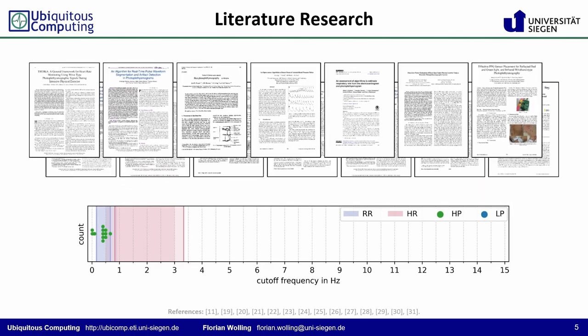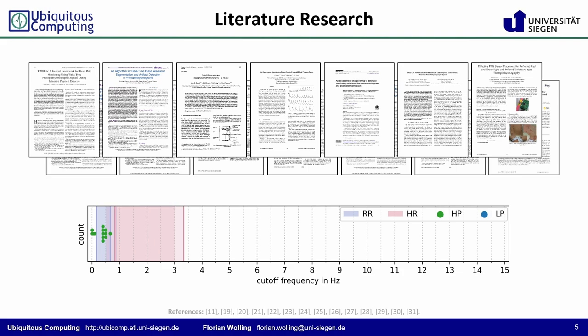The lower cutoff frequency is usually placed at the lower bound of the natural cardiac frequency band. Depending on the intended application, the respiratory frequency band is of interest and either explicitly included or excluded. In contrast, the placement of the upper cutoff frequency shows greater variety. Besides the upper bound of the heart rate, it also depends on the applied algorithm and the desired number of harmonics to shape the pulse peaks.